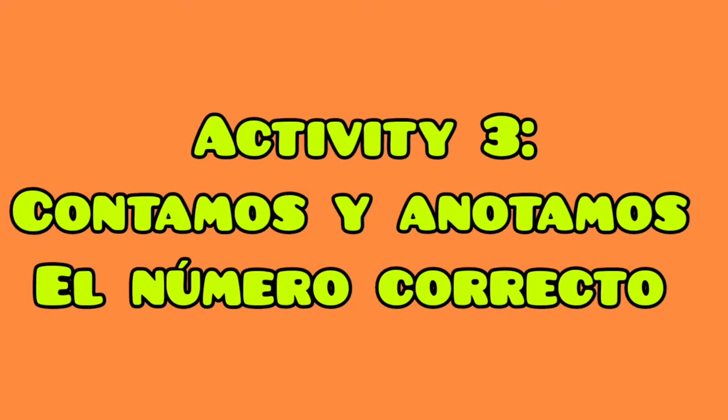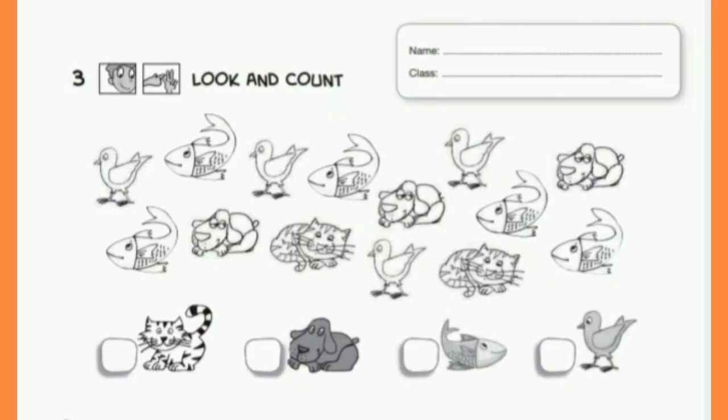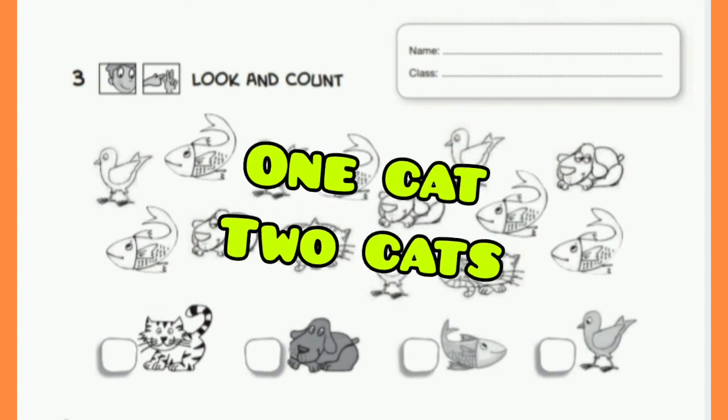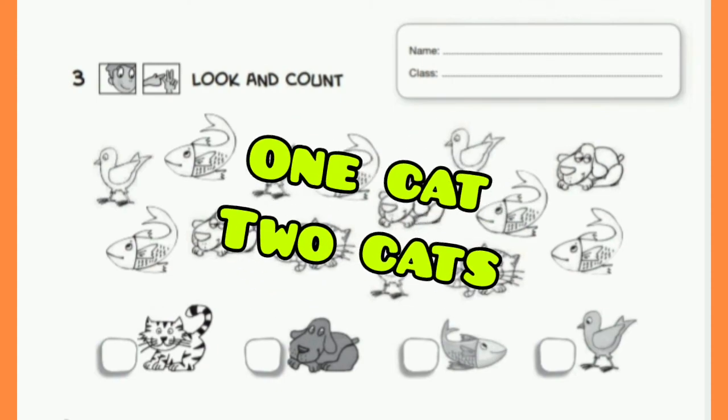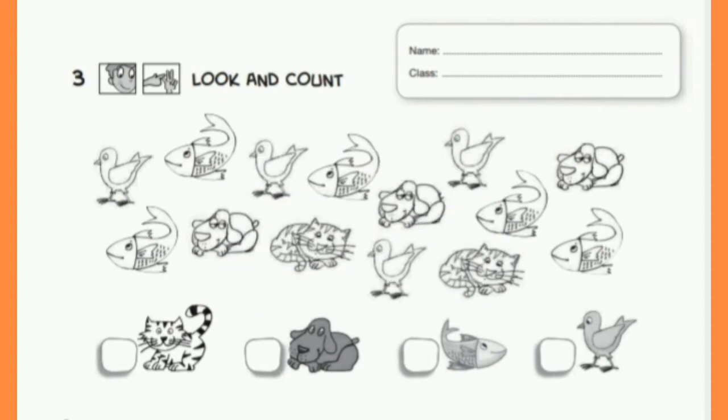En la tercera y última actividad anotamos y contamos el número correcto. Por ejemplo, si contamos la cantidad de gatos van a ser one and two. Two cats. Entonces en el dibujo donde está el gato anotaremos el número dos.